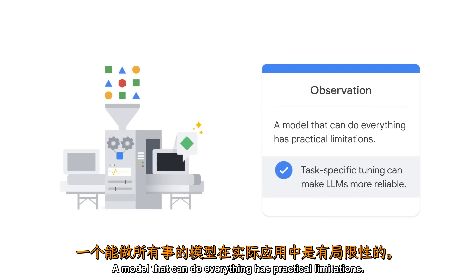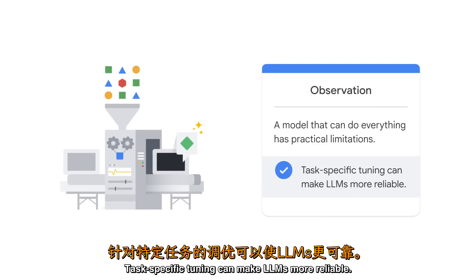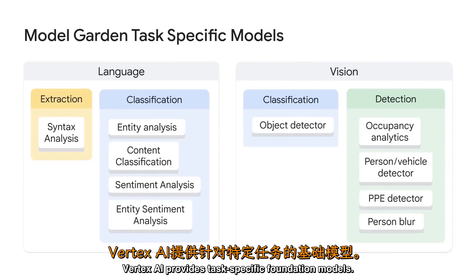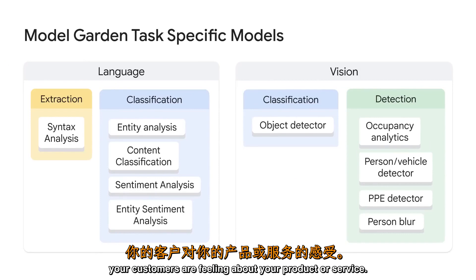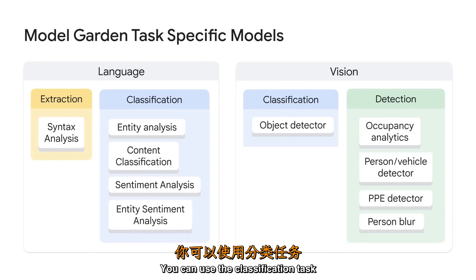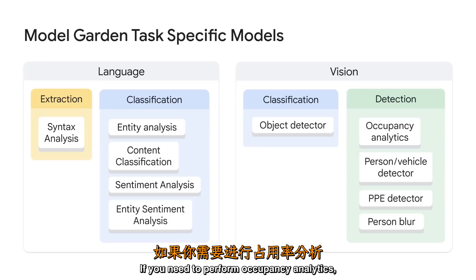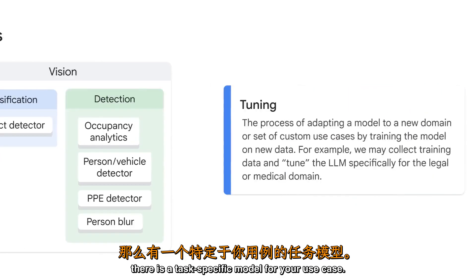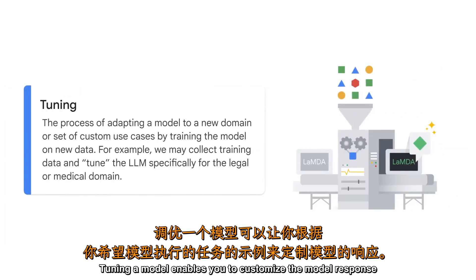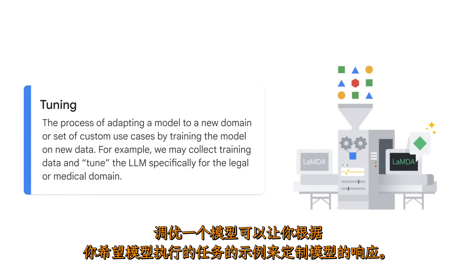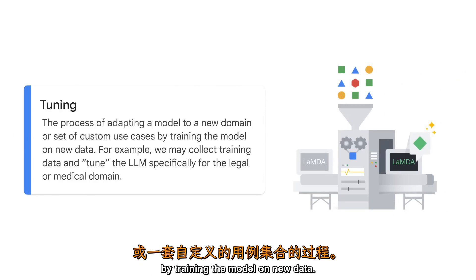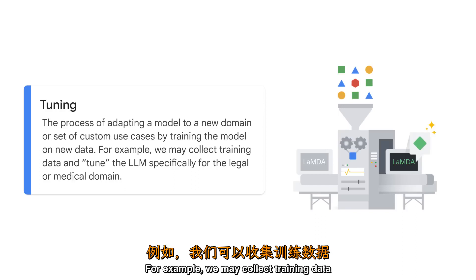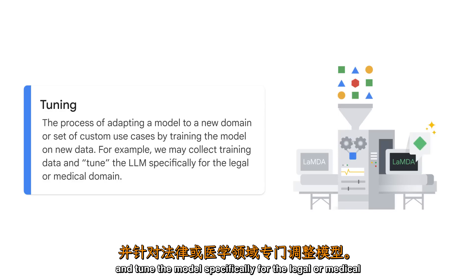A model that can do everything has practical limitations, so task-specific tuning can make LLMs more reliable. Vertex AI provides task-specific foundation models. For example, if you need to gather sentiments about your product or service, you can use the classification task sentiment analysis model. Similarly for vision tasks, if you need to perform occupancy analytics, there is a task-specific model for your use case. Tuning a model enables you to customize responses based on examples of the task, adapting the model to a new domain — for instance, tuning specifically for the legal or medical domain.